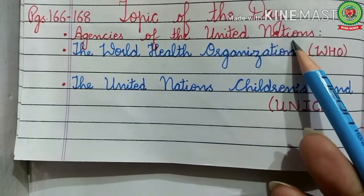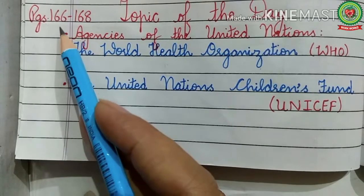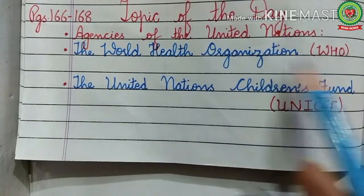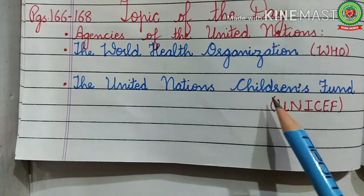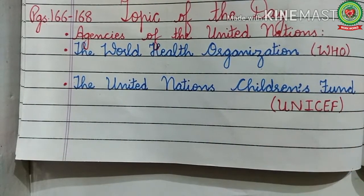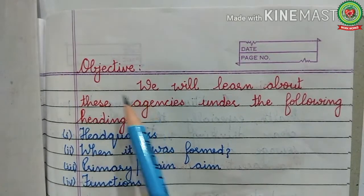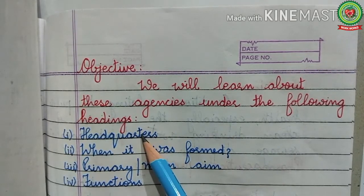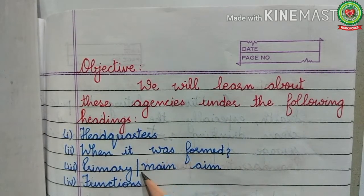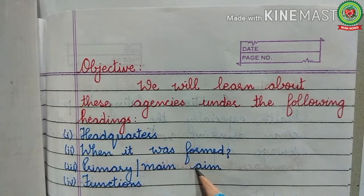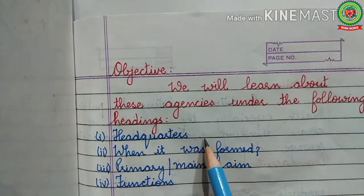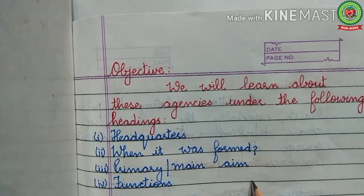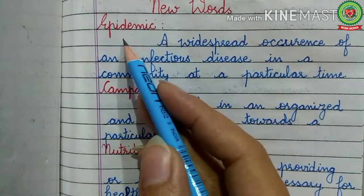Today's topic covers pages 166 to 168, discussing the World Health Organization (WHO) and the United Nations Children's Fund (UNICEF). We will study these agencies under the following headings: headquarters, when it was formed, primary or main aim, and its functions. Before discussing these points, let us look at new words related to today's topic.